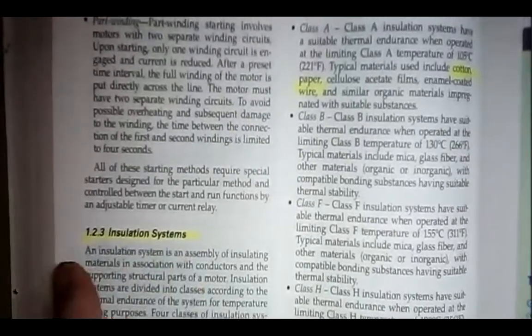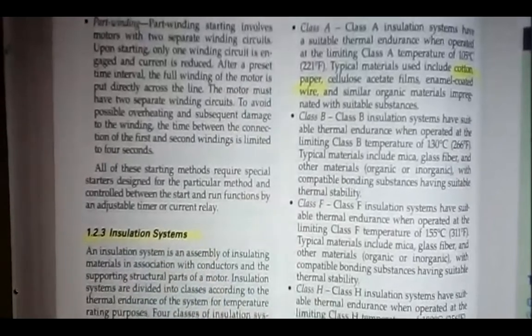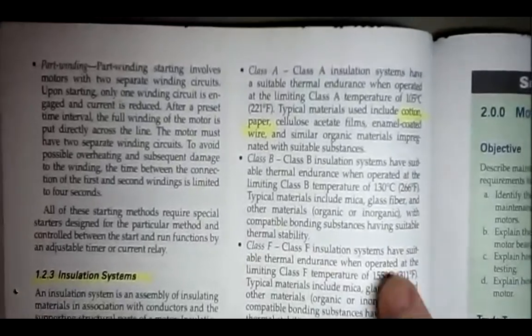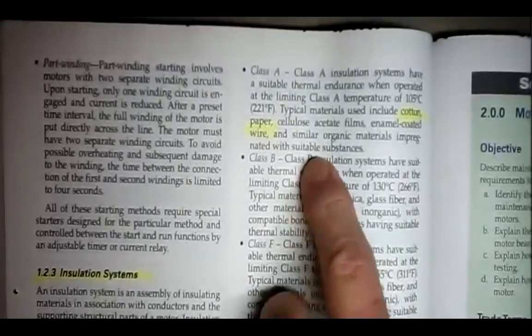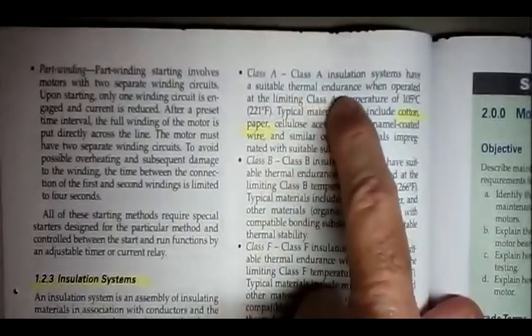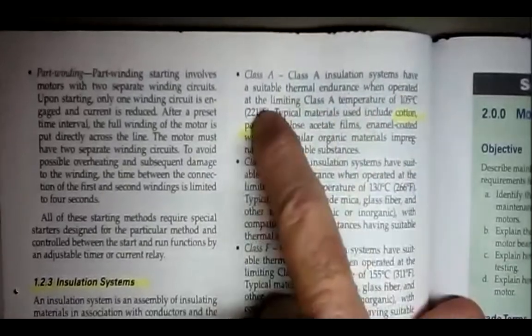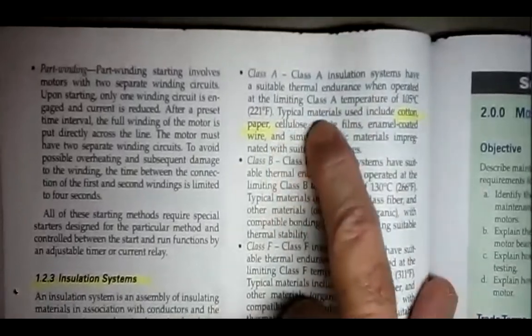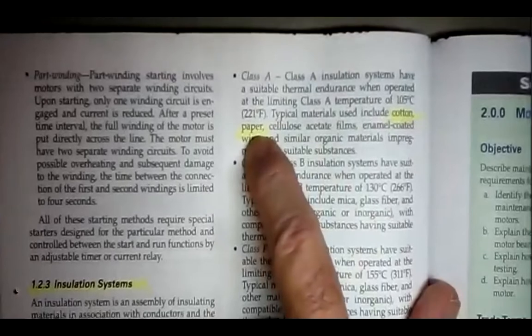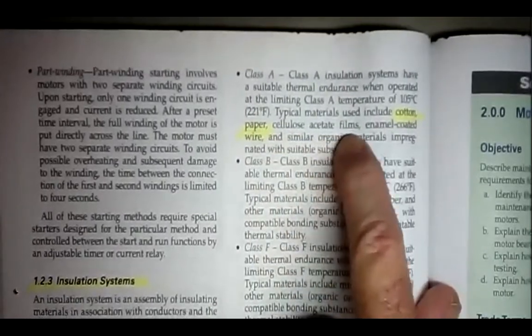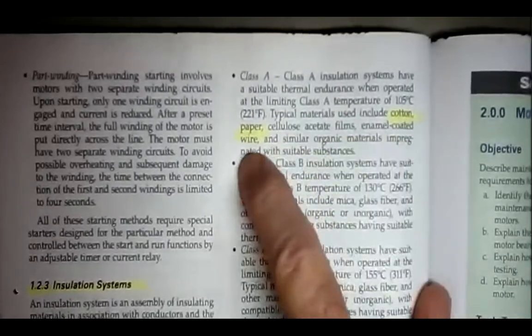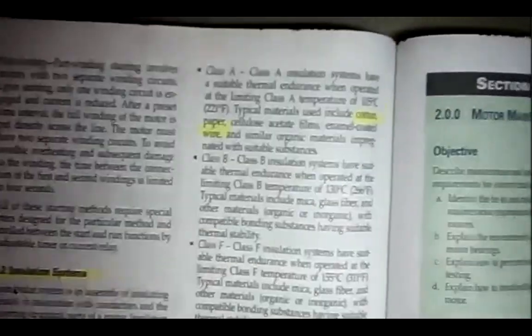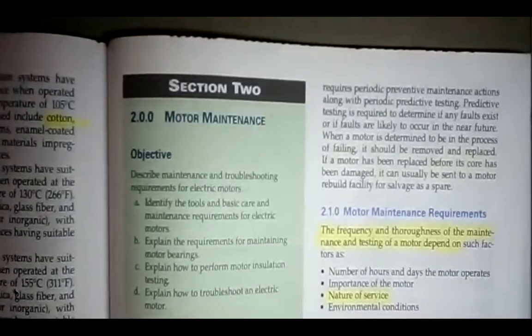Insulation systems, this is between the windings. The windings are varnished. It's a varnished wire. It's not a very thick insulation at all. Class A, class A insulation systems have a suitable thermal endurance when operated at a limiting class A temperature of 105 degrees Celsius. Typical materials used include cotton, paper, cellulose acetate films, enamel coating wire, coated wire. So those are the different types of insulation they use on a class A motor.